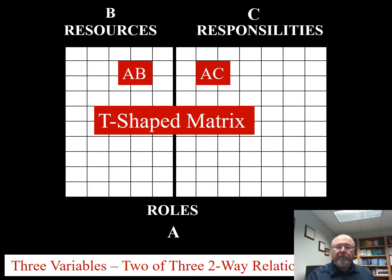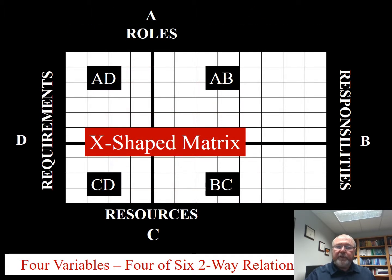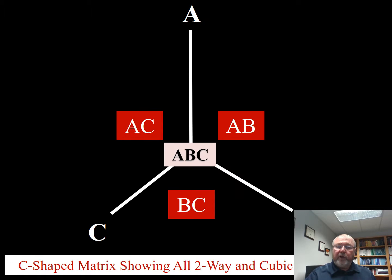There's an example of a T-shaped matrix where you can relate A with B and B with C, where A is stretched up and down. Simple graphic representations of an X-shaped matrix, a Y-shaped matrix where you can look at A with B, B with C, and A with C — all of the two-way relationships. And a cubic representation showing three-dimensional space, though again I've never seen that used in practice.